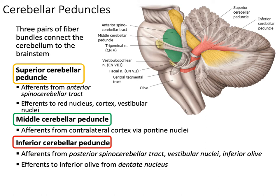One of the main functions of the cerebellum is to correct actions — it's inhibitory. With the middle cerebellar peduncle, your cortex plans to do something and tells the cerebellum what it's planning. The cerebellum can know, based on the ascending tracts, if you're doing the action correctly or not. If you're not, it will use its motor sequences to correct your actions.